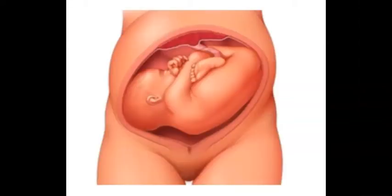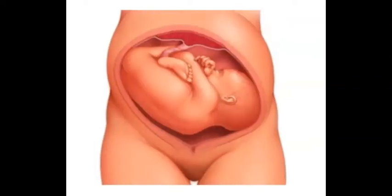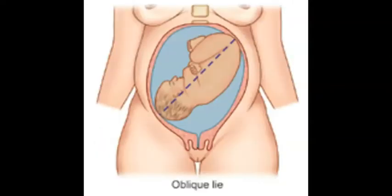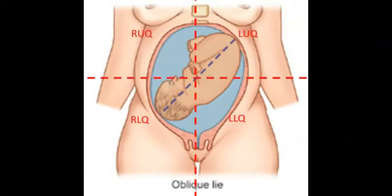So how do we describe a transverse lie? Easy — wherever the baby's head is on the mother, left or right, that's how we're going to describe it. And finally we have our oblique lie where the baby isn't lying truly vertically or horizontally but more on a diagonal. This can further be described by which maternal quadrant that baby's head can be found. For example, in this image the baby's head is in the mother's right lower quadrant, so that's how we could describe this oblique lie.